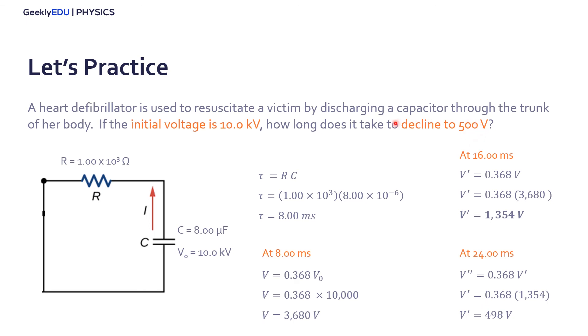So how long does it take to decline to 500 volts? Well, it's around 24 milliseconds, three time constants after it starts to discharge.